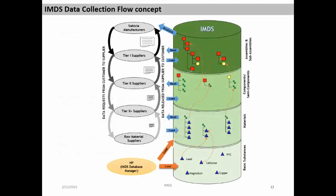These are all the details about IMDS, ELV, aims, recyclability and recoverability targets, and how to calculate them. Now, I show you a diagram which helps you understand the IMDS data flow — the IMDS data collection flow concept. HP is the IMDS database manager and manages the system. They have loaded all the substances in the materials of different kinds. As you can see at the bottom level, substances like lead, cellulose, PVC, copper, iron are loaded in the system. These substances make up the materials, the materials make up the components and semi-components, and the components make up the assemblies and sub-assemblies.